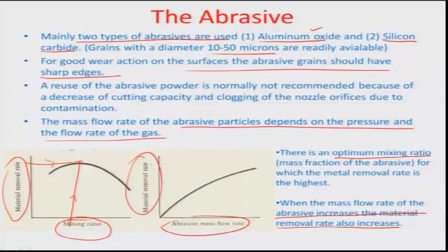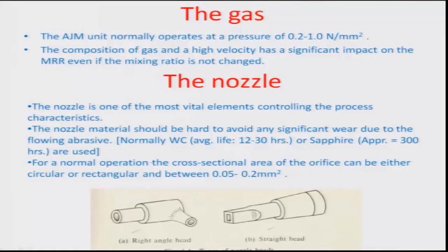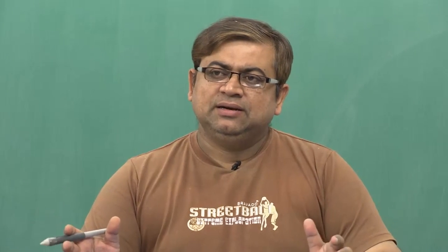Regarding the gas, AJM typically operates at pressures in the range of 0.2 to 1.9 Newton per meter square. Gas composition and high velocity have a significant impact on MRR even if the mixing ratio is unchanged. It is important to avoid a corrosive gas because this is an open chamber process — the gas should be environmentally benign and not affect the operator, so it should be non-corrosive as far as possible.